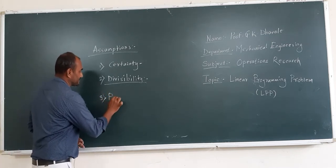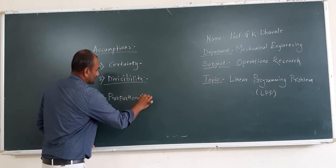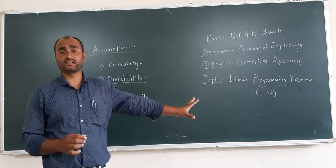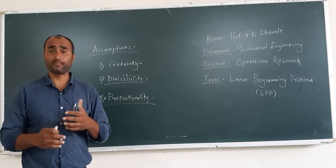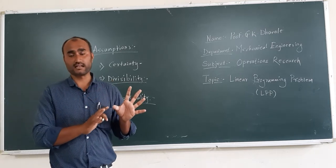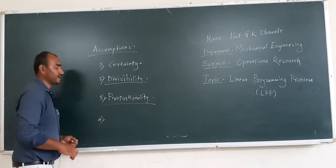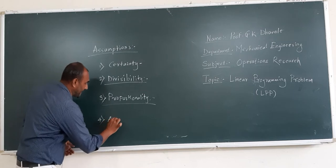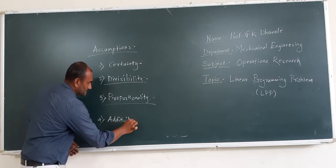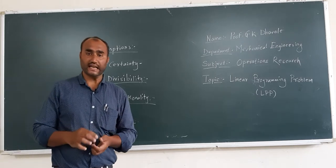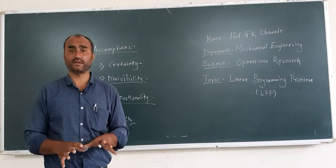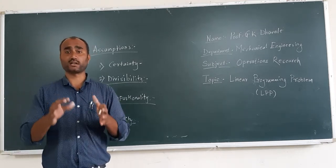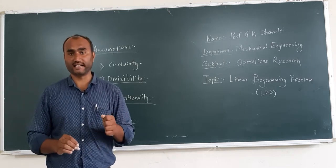The third assumption is proportionality. All the decision variables should be interrelated with the objective function and the constraints, and they should be proportional with the values of the objective function and the constraints. The last assumption is additivity. Suppose there are two products A and B and combined they have a profit of some value. If we add the profit of A and B individually, it should come to the same value as the combined profit. That is additivity.